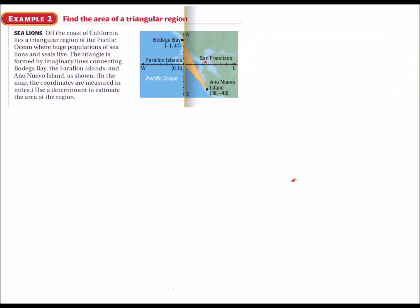Determinants can also be used to find the area of triangular regions. For example, in this problem about sea lions - this is appropriate for this class since we're always talking about seals. Consider this triangular region on the map. The triangle is formed by imaginary lines connecting Bodega Bay, Farallon Islands, and Año Nuevo Island. Use a determinant to estimate the area of the region.